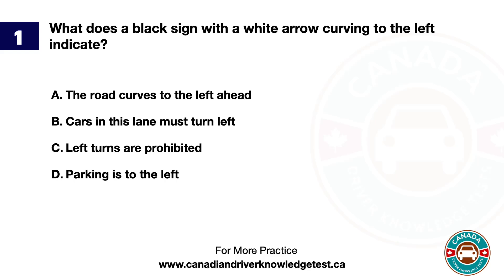Question 1. What does a black sign with a white arrow curving to the left indicate? A. The road curves to the left ahead. B. Cars in this lane must turn left. C. Left turns are prohibited. D. Parking is to the left. The answer is B. Cars in this lane must turn left.